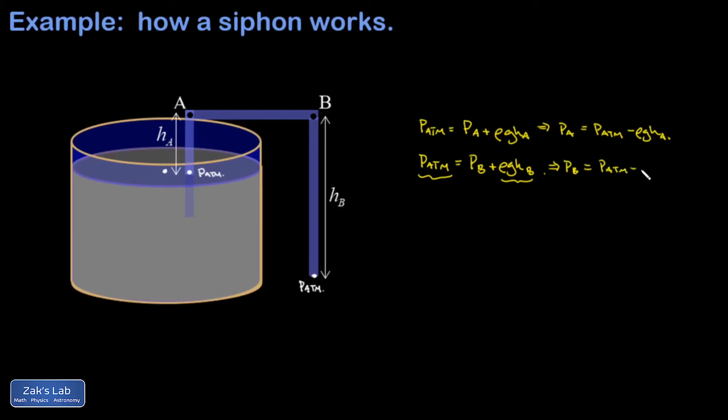So then given that hB is bigger than hA, again this is just saying mathematically that the end of this tube is below the surface level of the water, that means that PA has had a smaller number subtracted from atmospheric than PB did, so PA must be bigger.